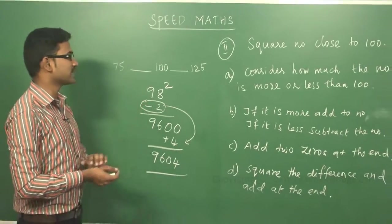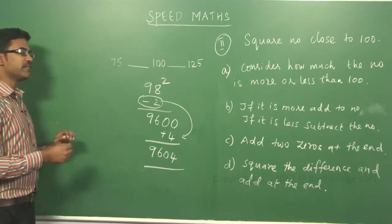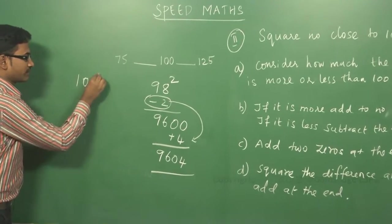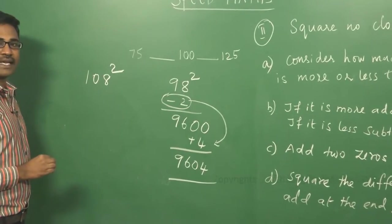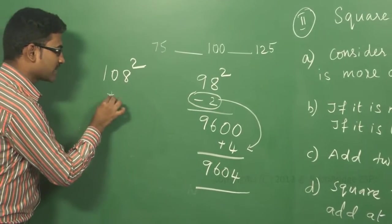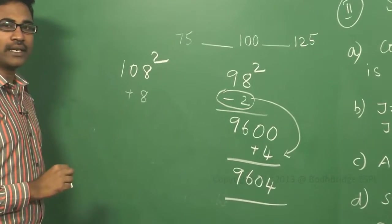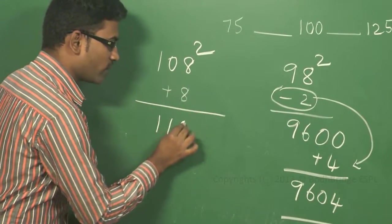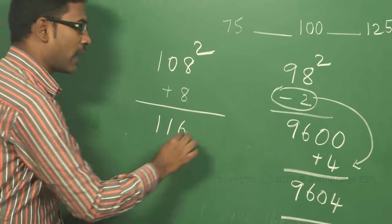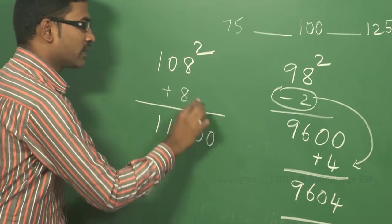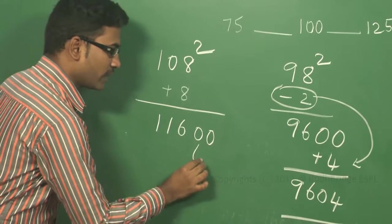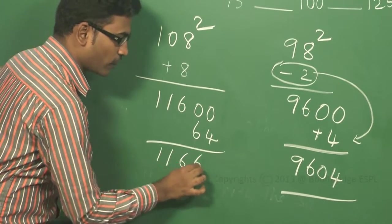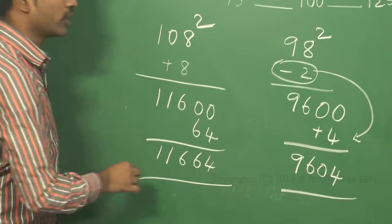Now I will take a similar example which is more than 100: 108 squared. This is plus 8 because it is more than 100. So I have to add: 108 plus 8 equals 116. Third step: add two zeros. The difference is plus 8; squared, it becomes 64. So 11664 will be the answer for 108 squared.